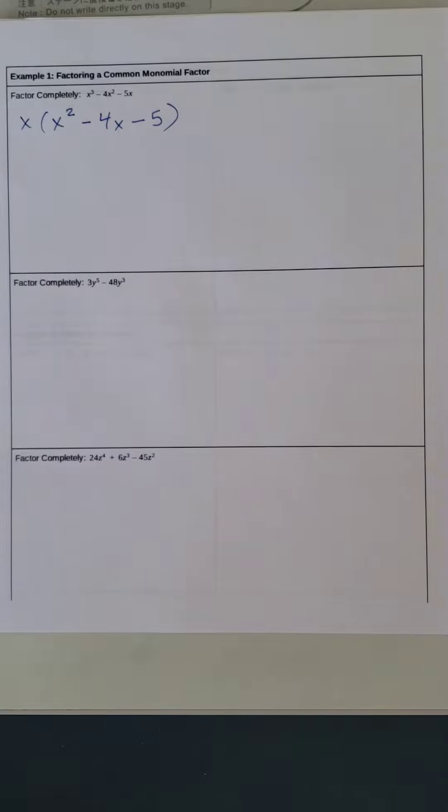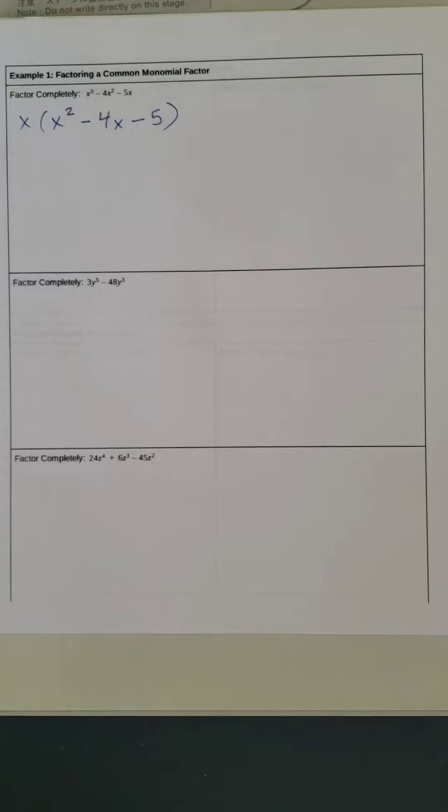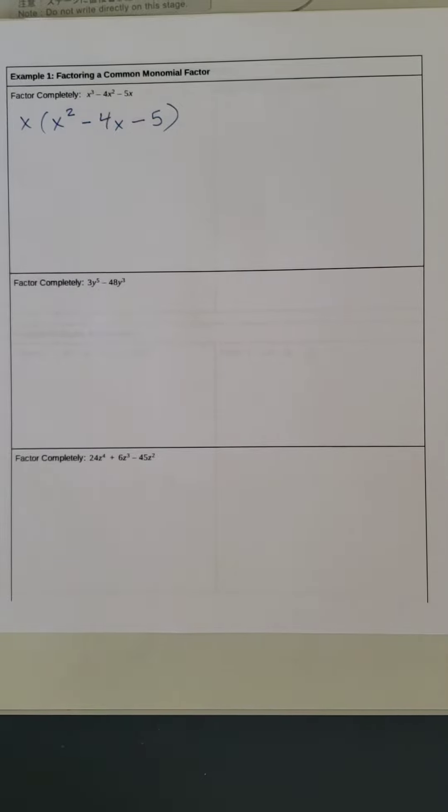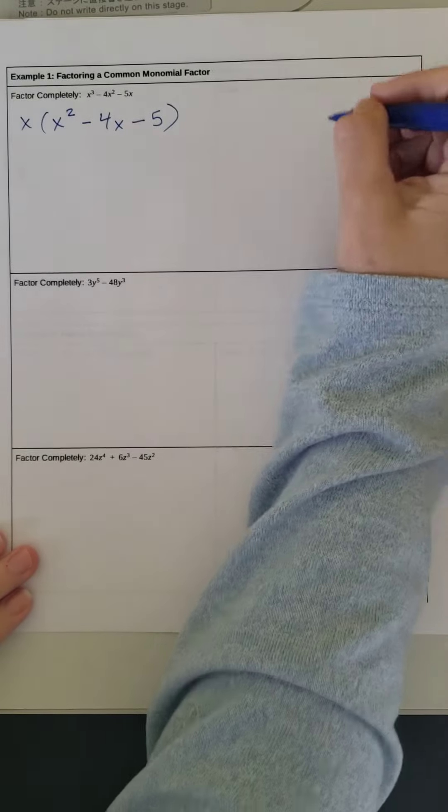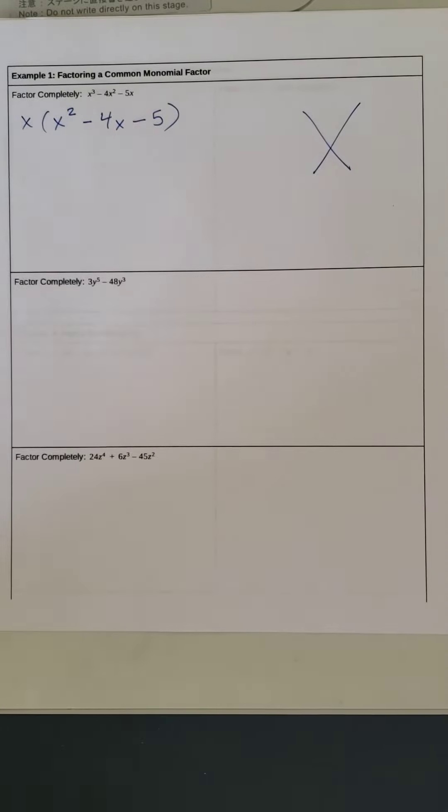So we have three terms, trinomial. Using our factoring best practices sheet, we have three terms. It goes x squared x, and then there's no x. So we're going to use our x method to factor it.